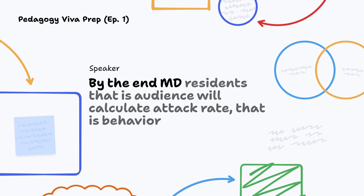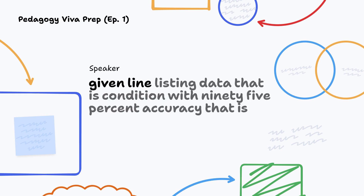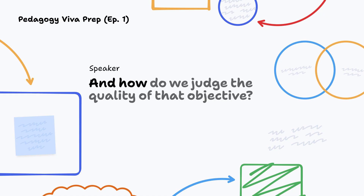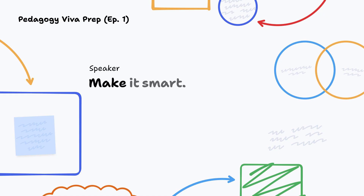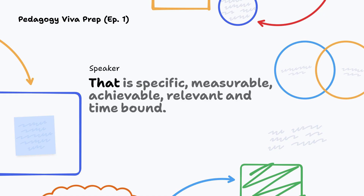By the end, MD residents (audience) will calculate attack rate (behavior), given line listing data (condition), with 95% accuracy (degree). And how do we judge the quality of that objective? Make it SMART — that is, Specific, Measurable, Achievable, Relevant and Time-bound.